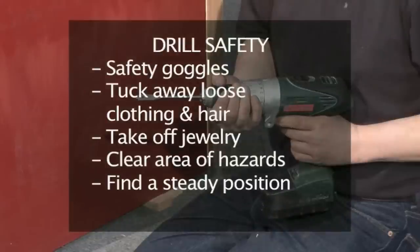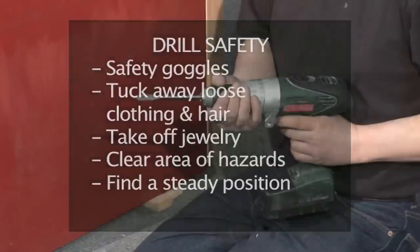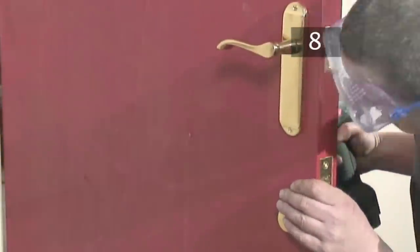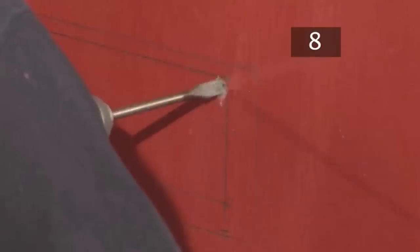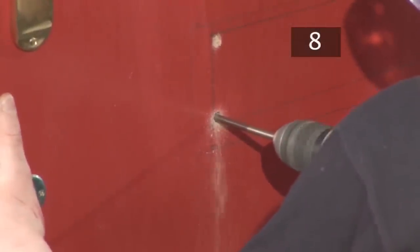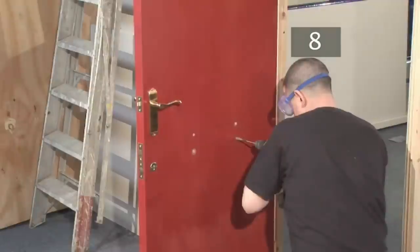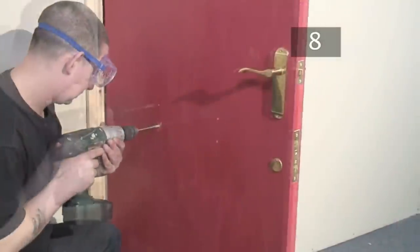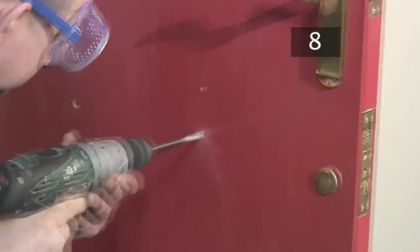Before you drill, remember drill safety. Put on your safety goggles, make sure that all loose items of clothing, jewelry and hair are tucked away. Clear the area of any potential hazards and find a steady standing position. Position the drill just inside a corner of the flap outline and drill. Stop when the drill begins to emerge through the other side of the door. Repeat this for the other corners. Then, drill through from the other side of the door. This will prevent the wood from splitting.